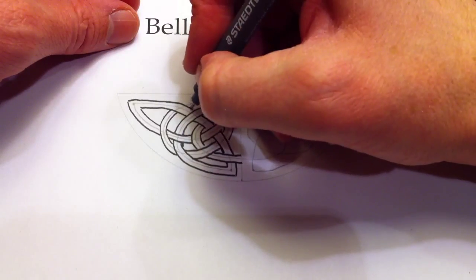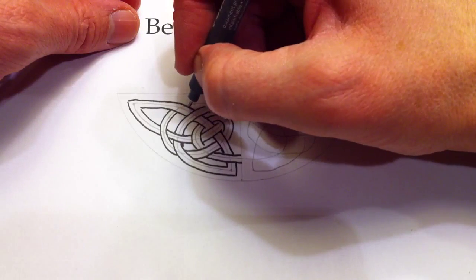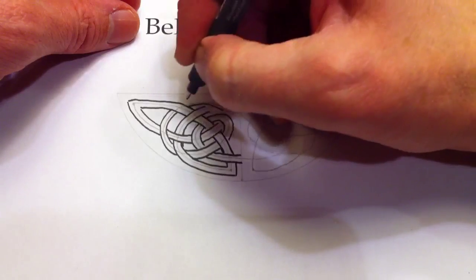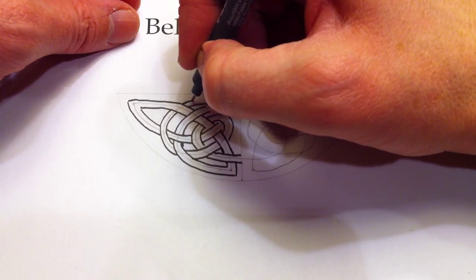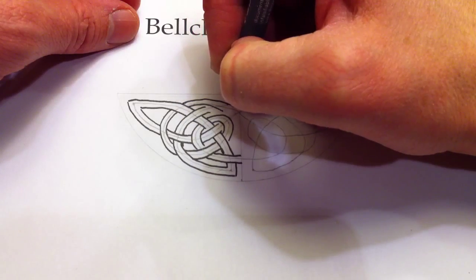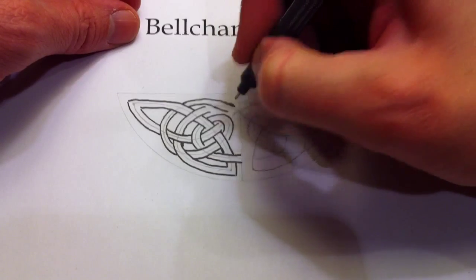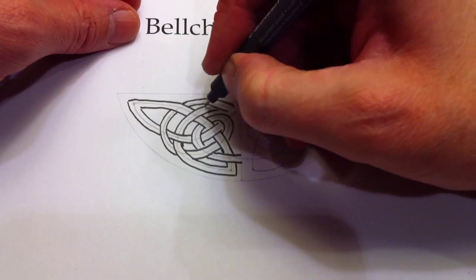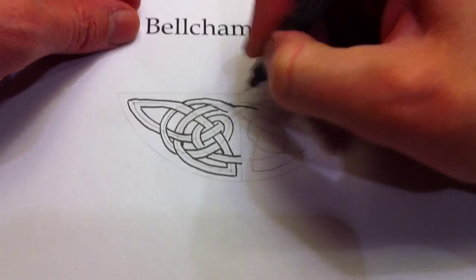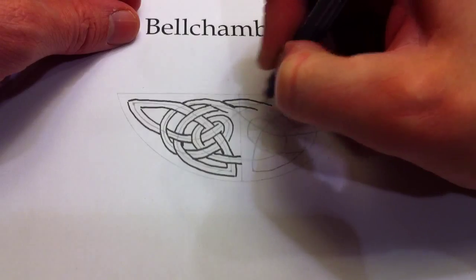So don't worry if the knot pattern is a little bit off, or too thick or too thin in spots, because you're gonna make it a little thinner with the thicker marker later on. So we're alternating over and under. Over and under.